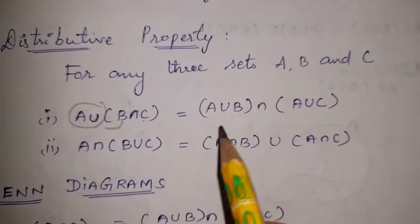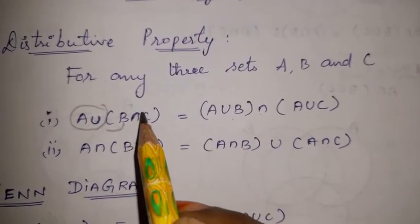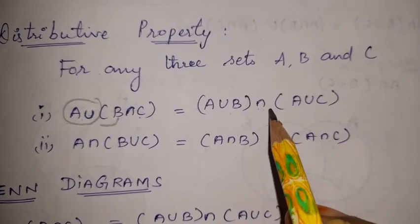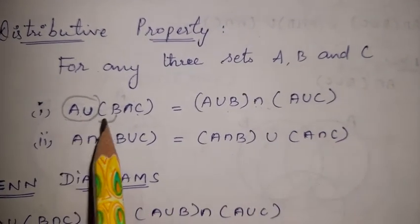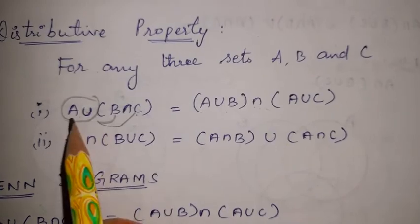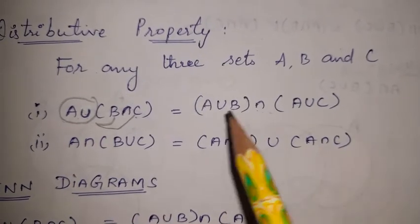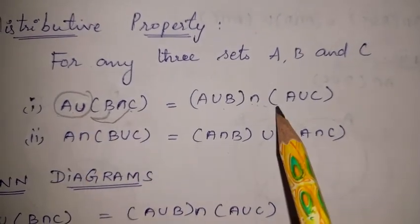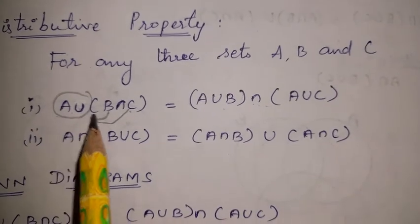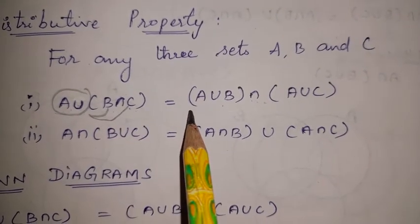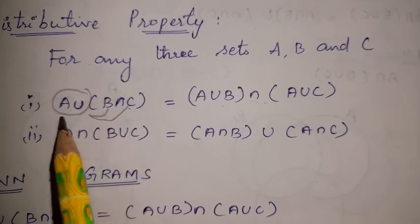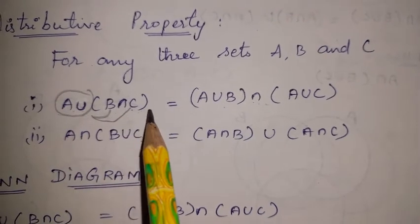Then A union C. So the full expression is: A union B intersection C equals A union C, giving us A union B intersection A union C.